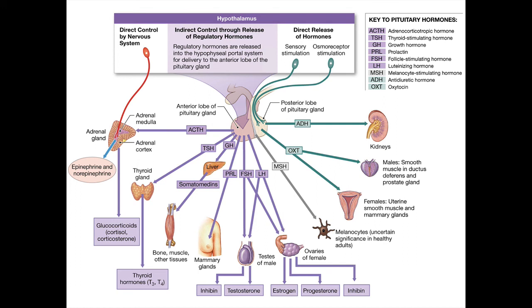The intermediate tissue of the pituitary releases melanocyte-stimulating hormone, MSH, which stimulates melanocytes in the skin — the cells that give us pigment. The posterior pituitary releases antidiuretic hormone and oxytocin. AVP and antidiuretic hormone are often referred to as the same thing, and AVP also stimulates the posterior pituitary to a degree.